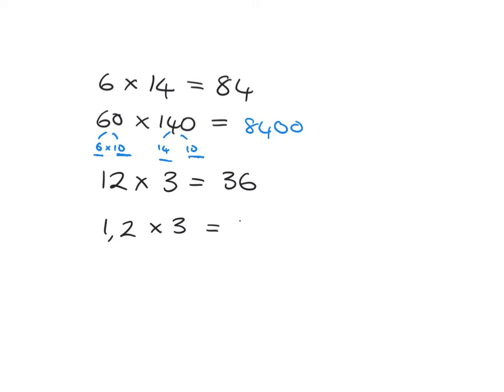And then similarly, if we know 12 times 3 is 36, right? How can that help us work out 1.2 times 3? Well, 1.2 times 3 is just like 12, but it's been divided by 10. And here we've just got a 3. Well, we know the 12 times 3 would just give us the answer of 36. But we need to divide it by 10. And when we divide by 10, we just change the place value to be 10 times smaller. And so we get 3.6.